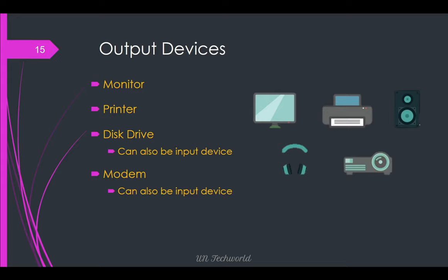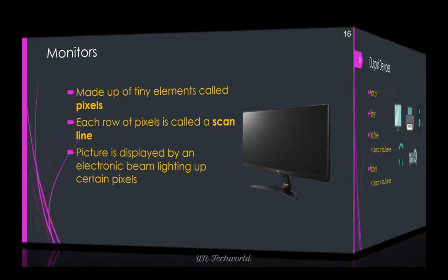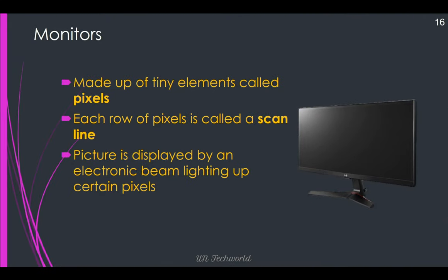Output devices include monitor, printer, disk drives, modems, projectors, speaker, etc. Monitor is made up of tiny elements called pixels. Each row of pixels is called a scanline. The picture is displayed by an electronic beam lighting up certain pixels.